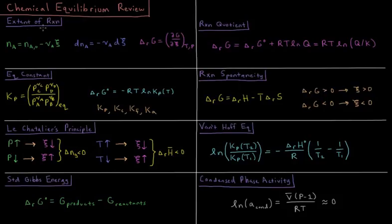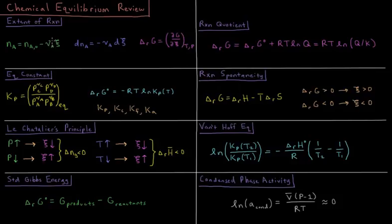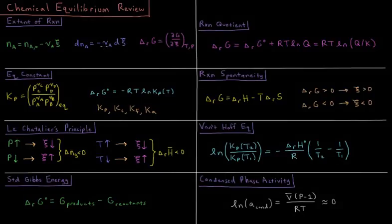We start by defining the extent of reaction, where if we have some reactant in our reaction, the number of moles of that reactant at a given point in the reaction is equal to the number of initial moles minus its stoichiometric coefficient times the extent of the reaction. So the change in the number of moles is equal to negative its stoichiometric coefficient times the change in the extent of the reaction. These values would be positive if it were a product.